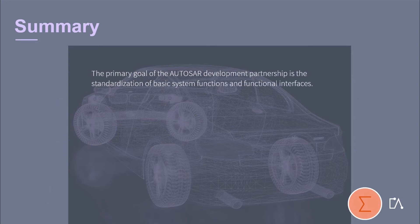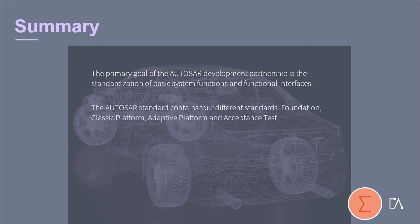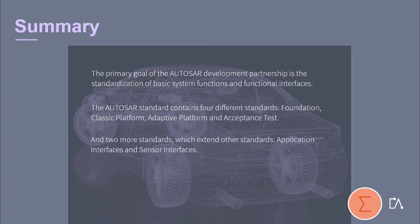The primary goal of the AUTOSAR Development Partnership is the standardization of basic system functions and functional interfaces. The AUTOSAR standard contains four different standards: foundation, classic platform, adaptive platform, and acceptance test. And two more standards, which extend other standards: application interfaces and sensor interfaces.